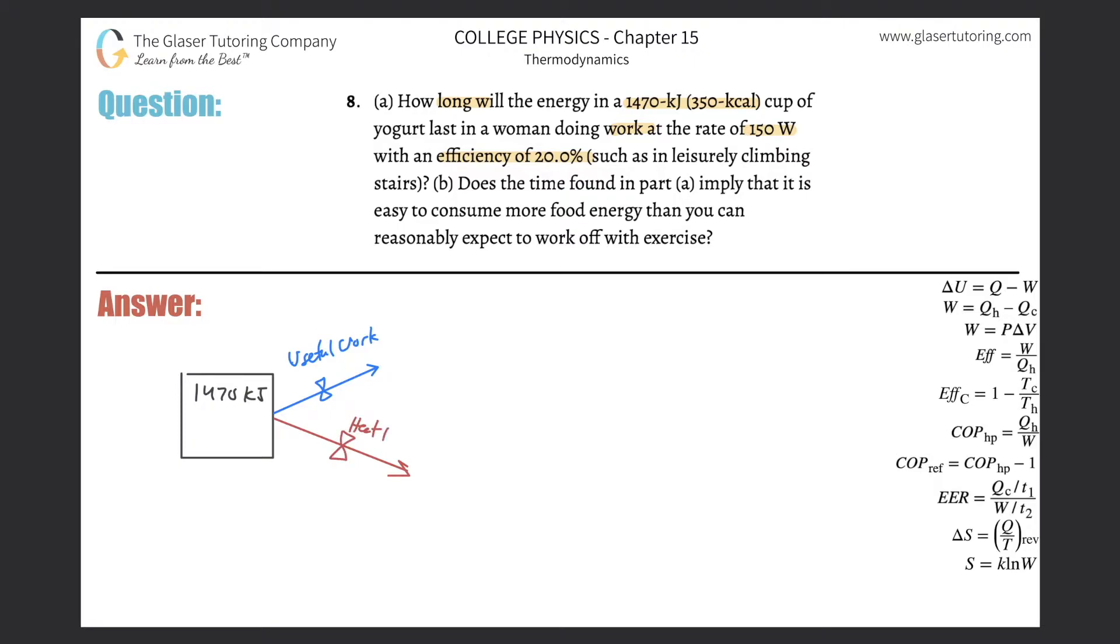We have useful work being output and heat energy being lost. This looks like the formula: internal energy is the change in heat and change in work. She's doing work at 150 watts but efficiency is only 20%. I spoke about efficiency in number five.